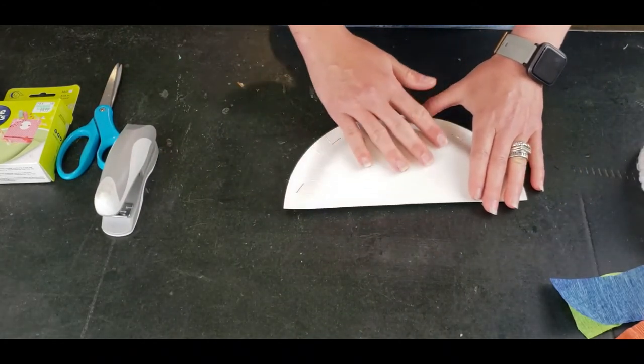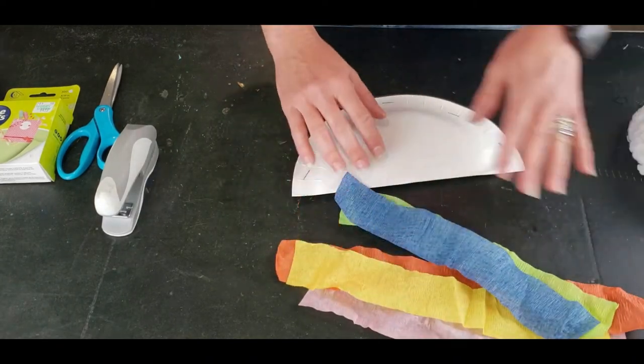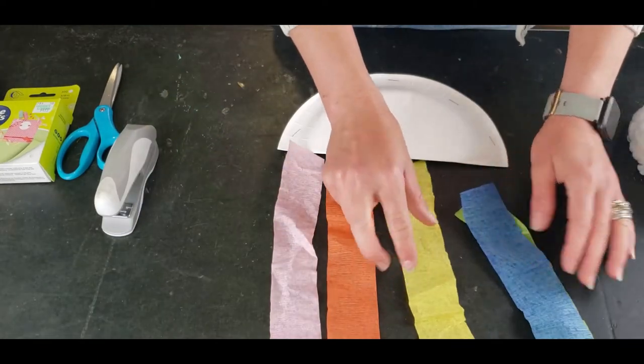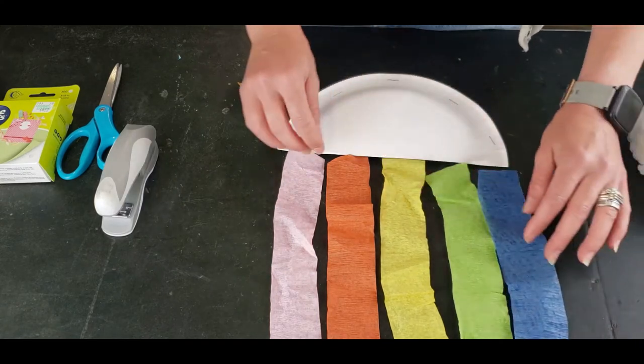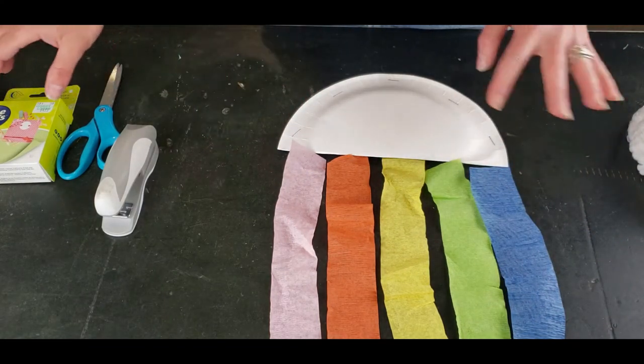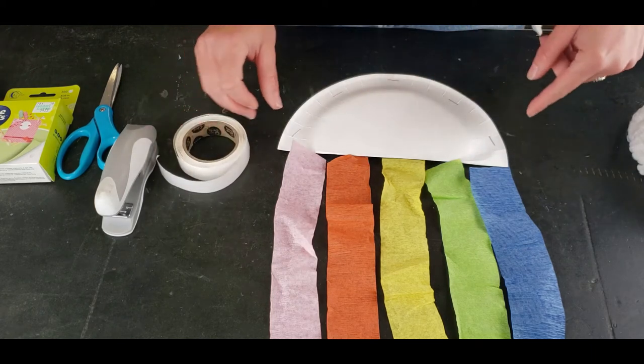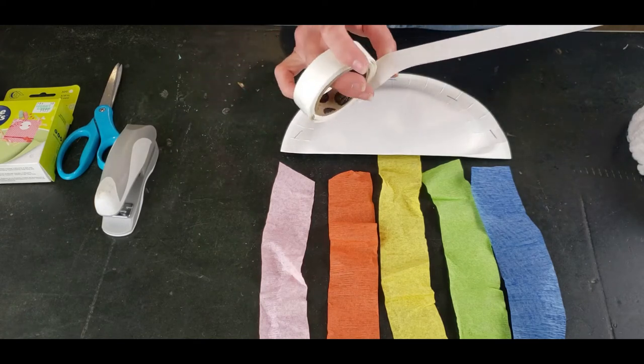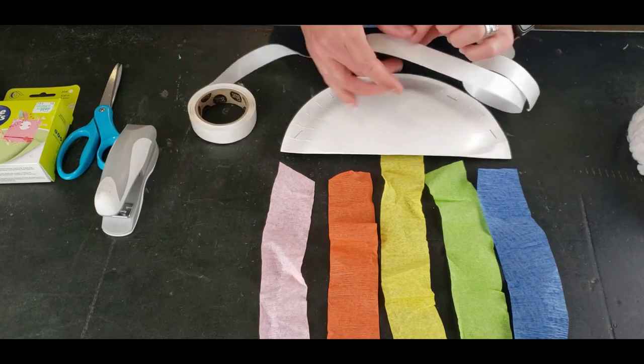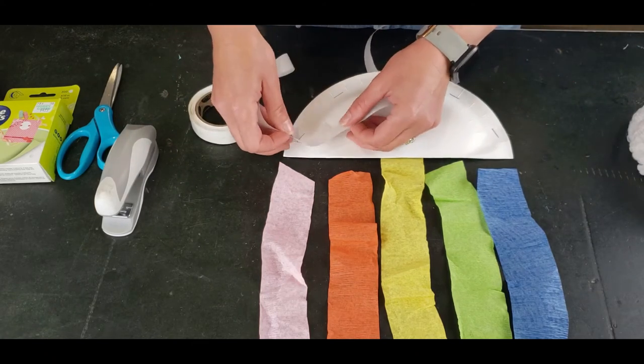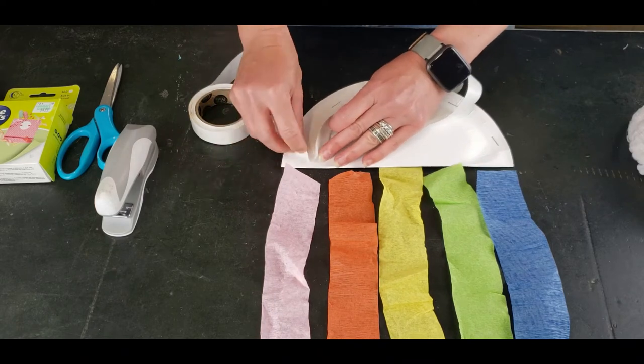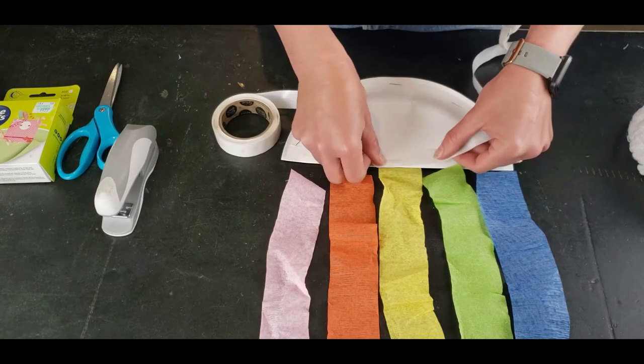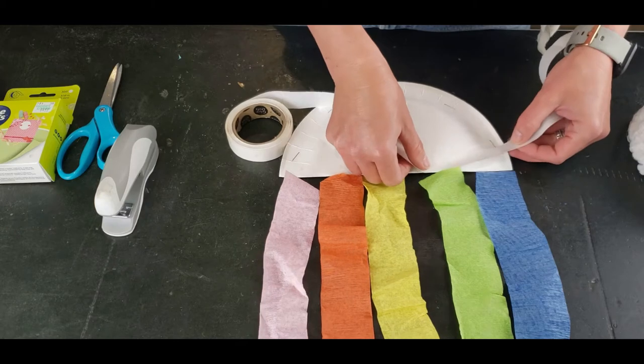And now we are going to add our streamers. So I have mine in sort of a modified rainbow, so I have a pink and an orange and a yellow, a green and a blue, and I am going to staple those or I'm going to use glue dots and adhere those to the back side of my cloud. So let me find the end of my glue dot strip here and I am just going to try to evenly space them across the back. But it doesn't matter too much.